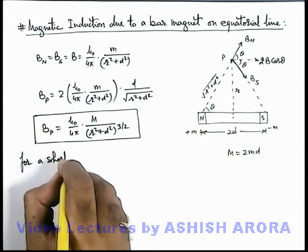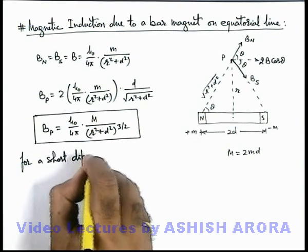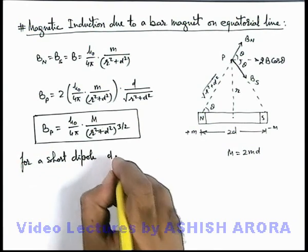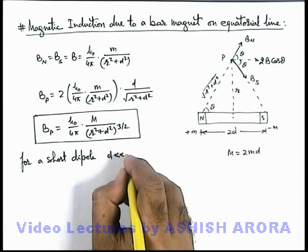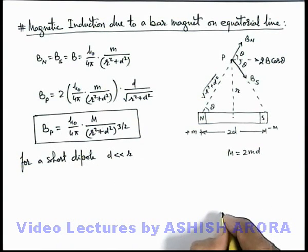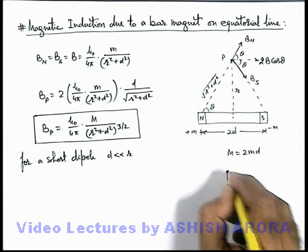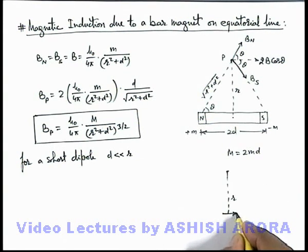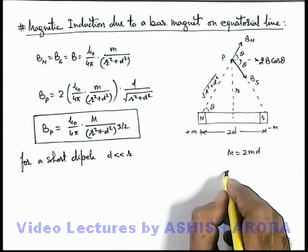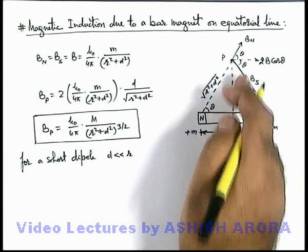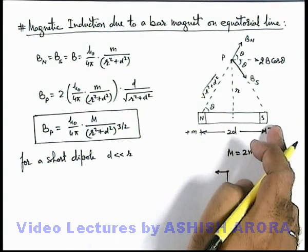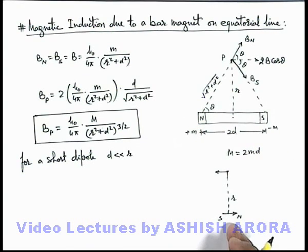For a short dipole, the basic difference will be d will be very very less compared to the distance. If this is a short dipole then at a distance, the magnetic induction is directed from south pole to north pole, so here the direction will be toward left because in this situation north is on the opposite side compared to what I have drawn here.